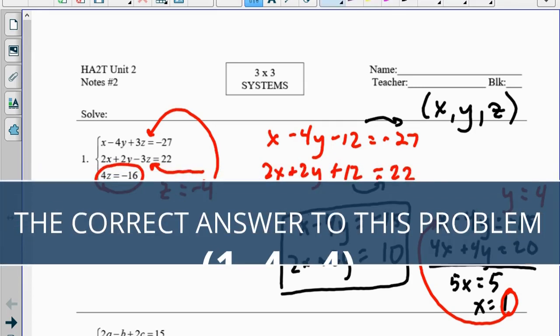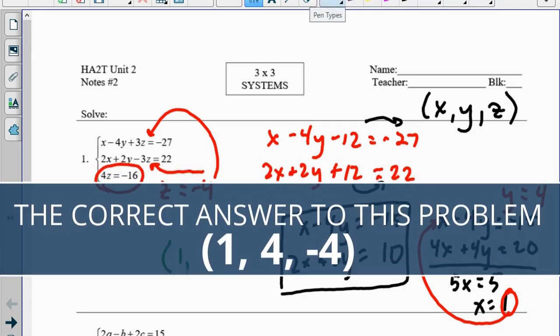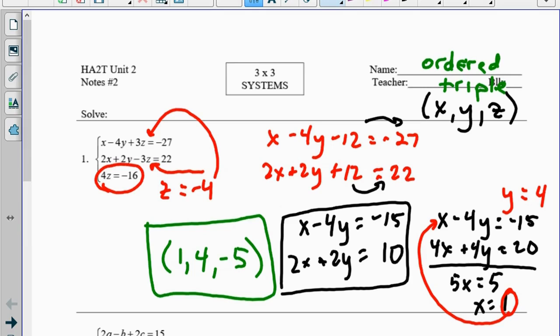So my final answer is 1 comma 4 comma negative 5. This is what we call an ordered triple. So that's an ordered triple, 1, 4, negative 5.